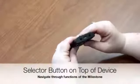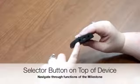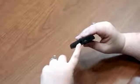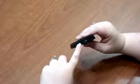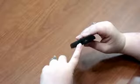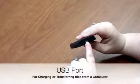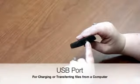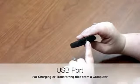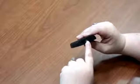On the top of the device, you will find the selector button, which is used to cycle through various functions of the Milestone 312. We will look at this in more detail later. Also on the top of the device is the USB connector port. This is where you attach the charger or use the provided USB cable to attach the unit to a computer.